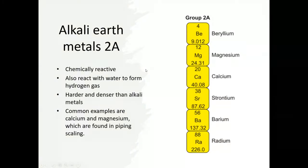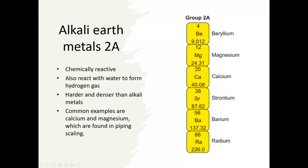Alkali earth metals are right next to the alkaline metals. Similarly, because they're on the left-hand side, they're quite reactive. They also react with water to form hydrogen gas. They're harder and denser than the alkaline metals. If you compare some familiar elements like magnesium and calcium, these are typically the things that coat our plumbing. If you have hard water, these types of deposits on your piping are quite hard. So calcium and magnesium - you find them in piping - are common examples.